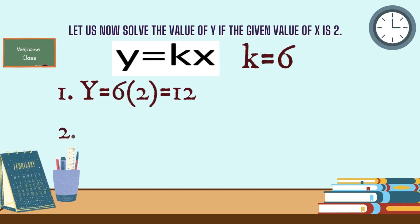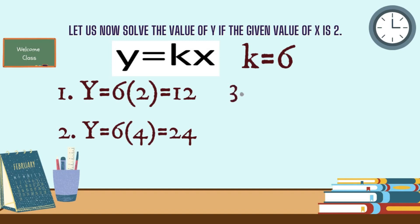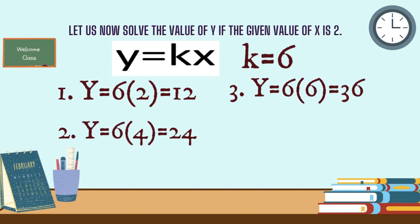Next, the value of x is 4. y equals 6 times 4, which is 24. Next, the value of x is 6. y equals 6 times 6, which is 36. Next, x is 8. y equals 6 times 8, which is 48.